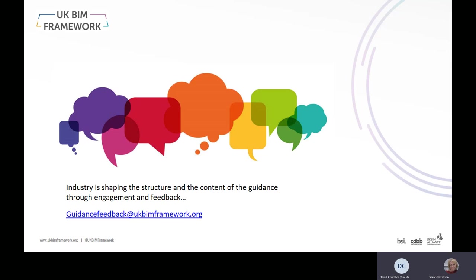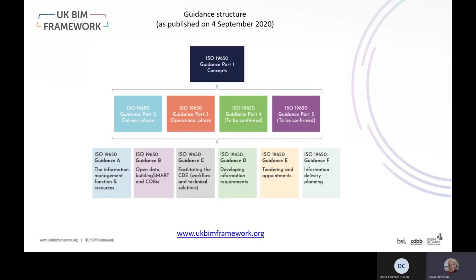The fourth edition of ISO 19650 Part 2 guidance was 160-plus pages long, which was clearly becoming unwieldy. Key feedback from industry was that we needed to make the guidance more accessible. So in July of this year, we developed a new guidance structure. We now have Part 1 guidance setting out the concepts of the ISO 19650 series overall, Part 2 guidance considering the specific requirements of Part 2, and Part 3 guidance, which has only recently been released. In addition, we have guidance parts A to F, intended to cut across the whole of the ISO 19650 series, covering key themes where detailed guidance is considered necessary.